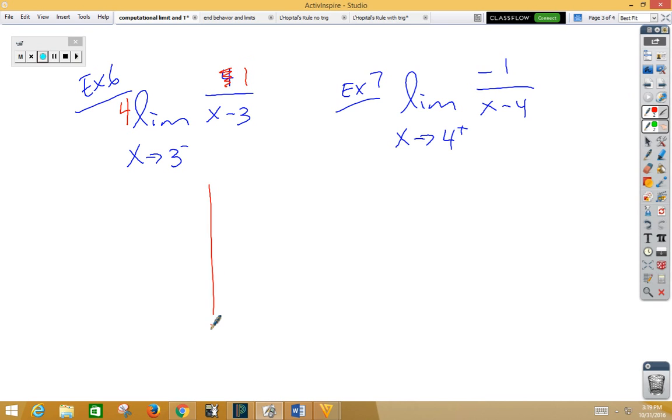Again, we have the same shape. It's as if this graph was shifted to the right 3. We're thinking about this shape, and as we approach from the left side, going down to negative infinity.